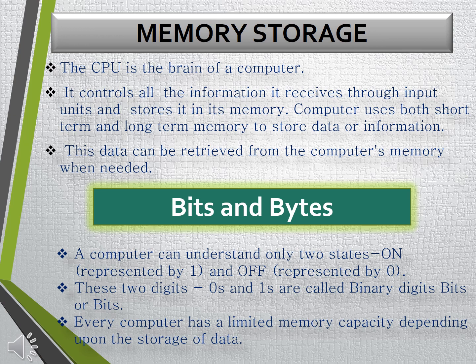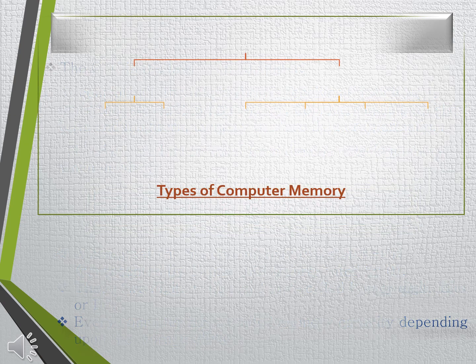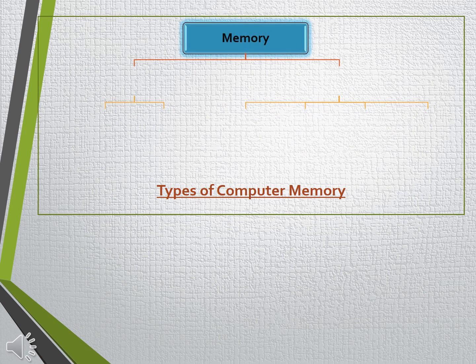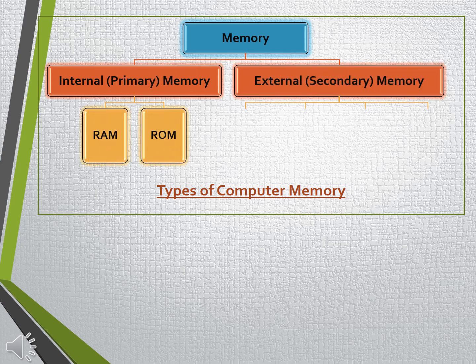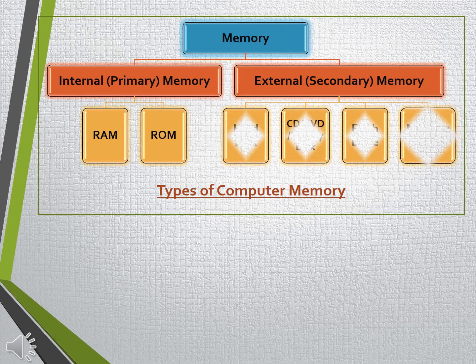Data can be either stored temporarily or permanently depending upon the capacity of the memory used. A computer memory is classified into two types: internal memory and external memory. RAM and ROM are the types of internal memory, whereas hard disk, flash drive, memory card, CD, and DVD are the types of external memory.